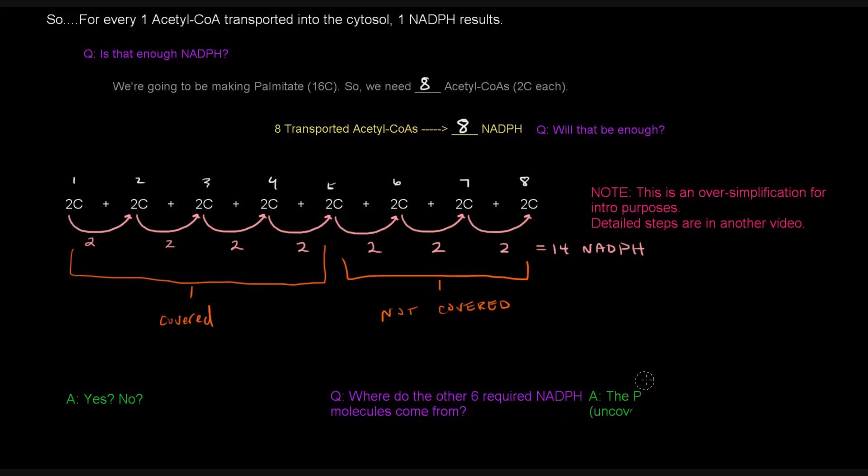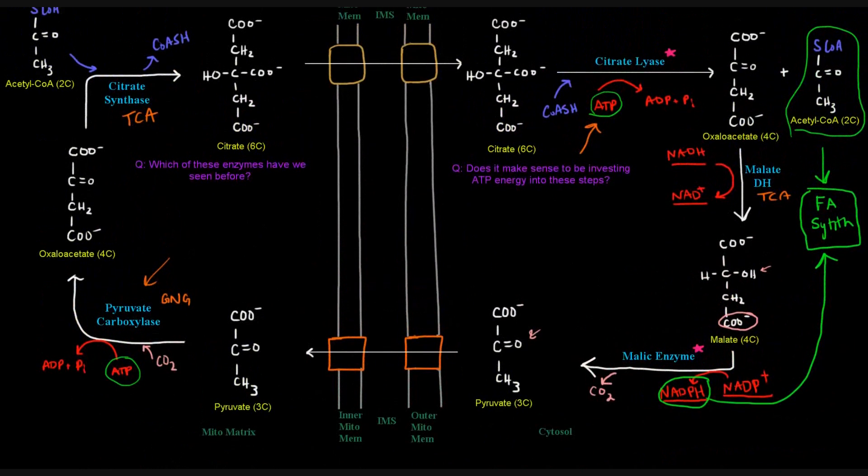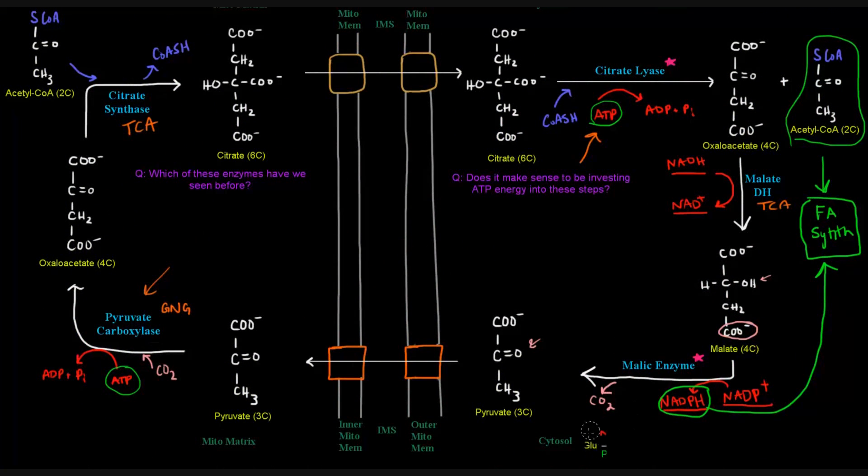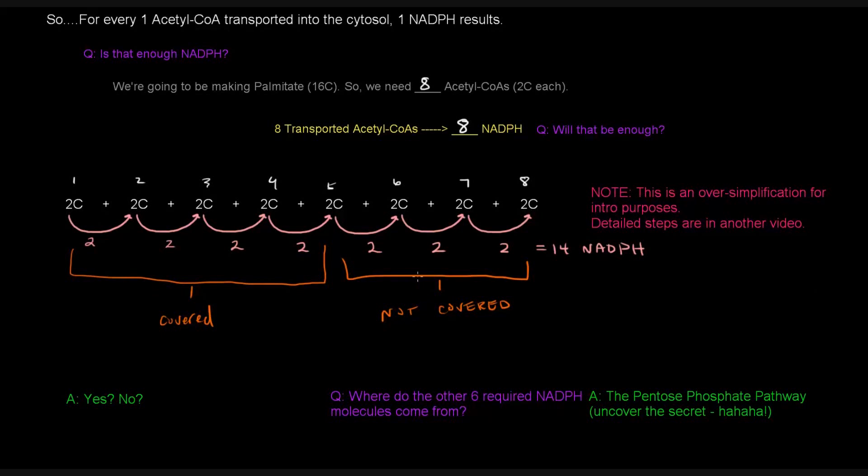So, the question is, where do the other six required NADPH molecules come from? And the answer is the pentose phosphate pathway. So, I'm going to uncover a little secret back up here. It's not really a secret. But, if we think about this, right, I've got a little, I'm just kind of sneaky here. I hid this from you guys. So, right here, this is really tiny down here, but this is the pentose phosphate pathway's first step, right? Taking glucose and turning it into ribulose 5-phosphate, the glucose 6-phosphate dehydrogenase step, that yields, that gives you NADPH, right? So, we get some NADPH out of this. And that also goes to fatty acid synthesis. So, the rest of the NADPHs come from the pentose phosphate pathway. Hope that video was helpful. Thank you for watching.